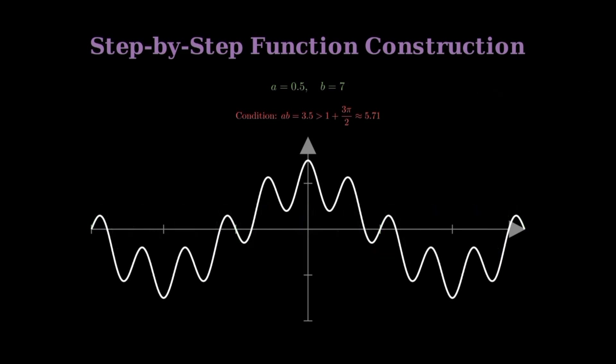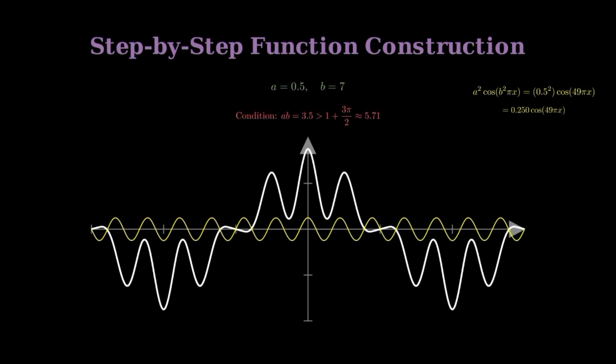Notice how the amplitude is smaller, but the frequency is much higher. The third term is a squared times cosine of b squared times pi x, or 0.25 times cosine of 49 pi x. The amplitude continues to decrease, but the frequency grows exponentially.